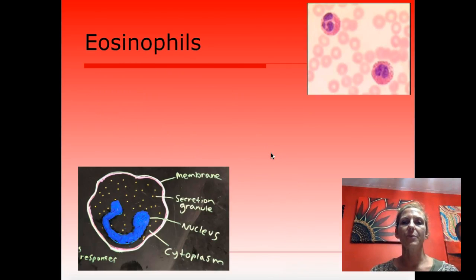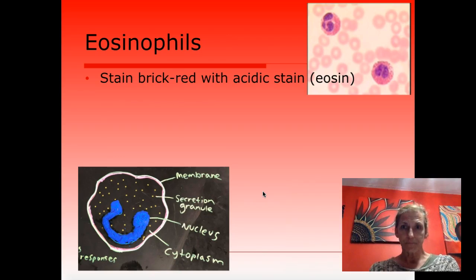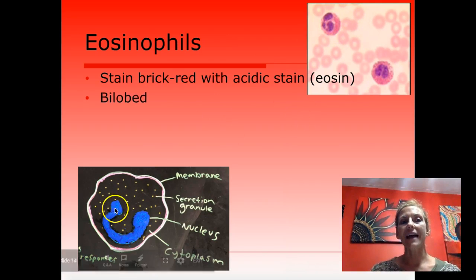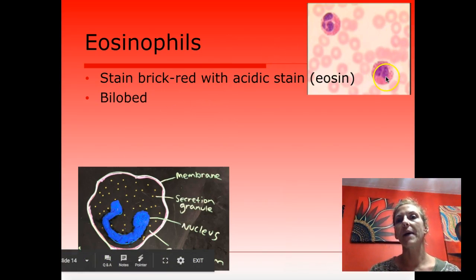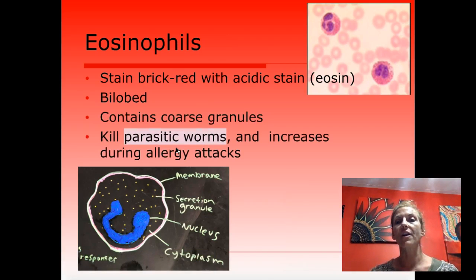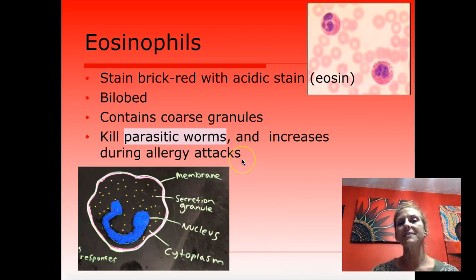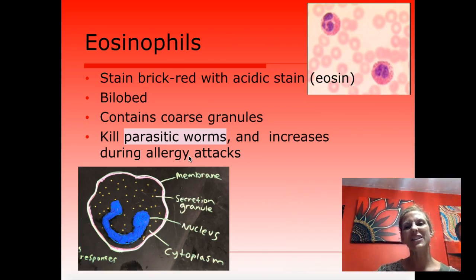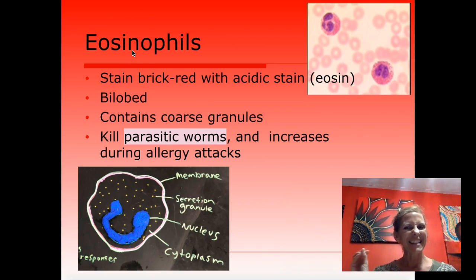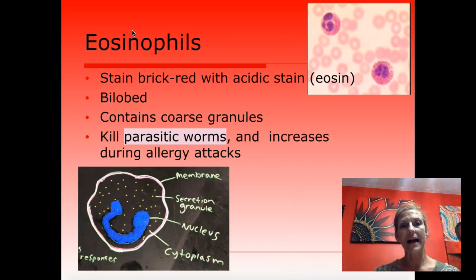Eosinophils stain with a chemical called eosin, which is acidic — that's how they got their name. They are bilobed — they look like headphones — with two lobes and lots of granules. They are active in parasitic infections, killing parasitic worms, and they also increase during allergy attacks because they are trying to offset the allergic reaction, not cause the inflammation. A mnemonic: 'pin' and 'sin' rhyme — eosinophils kill parasitic worms.